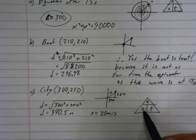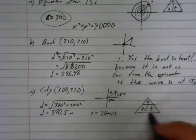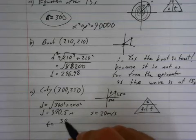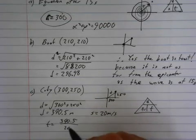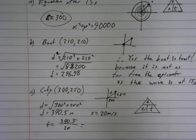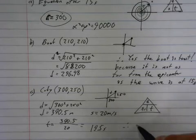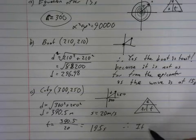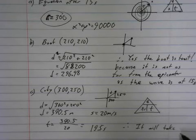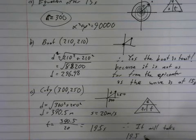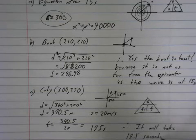I take distance divided by speed, and that gives me time. Time is equal to 390.5 over 20. Take my answer that I had in my calculator already, divide it by 20, and you get 19.52, or 19.5 seconds. Therefore, it will take 19.5 seconds for the wave to reach the city.